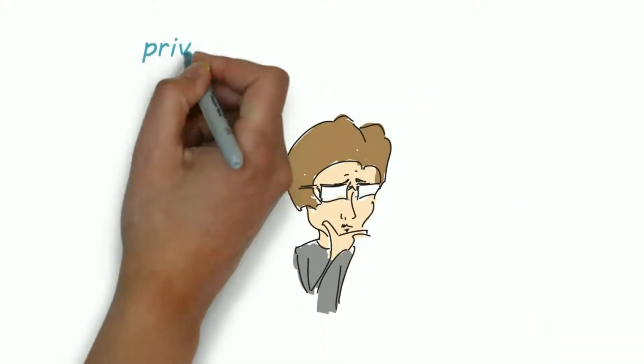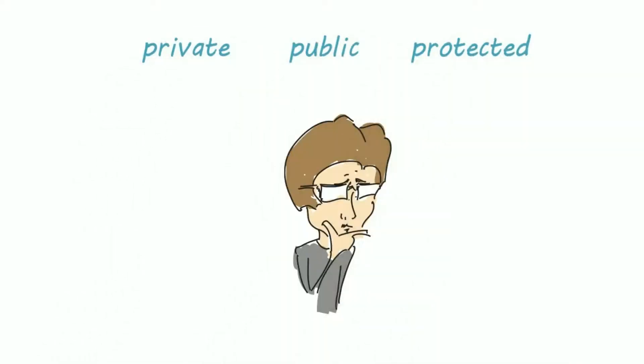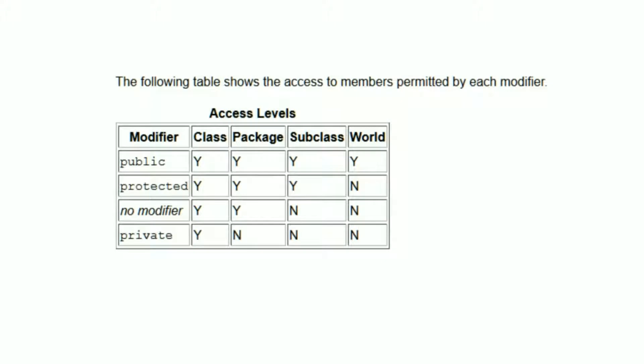Hi guys! Private, public, and protected modifiers determine which other classes can use a particular field or invoke a particular method. Java documentation has given this table of access levels, but I hate the traditional way of teaching, so let's add some more fun and creativity.